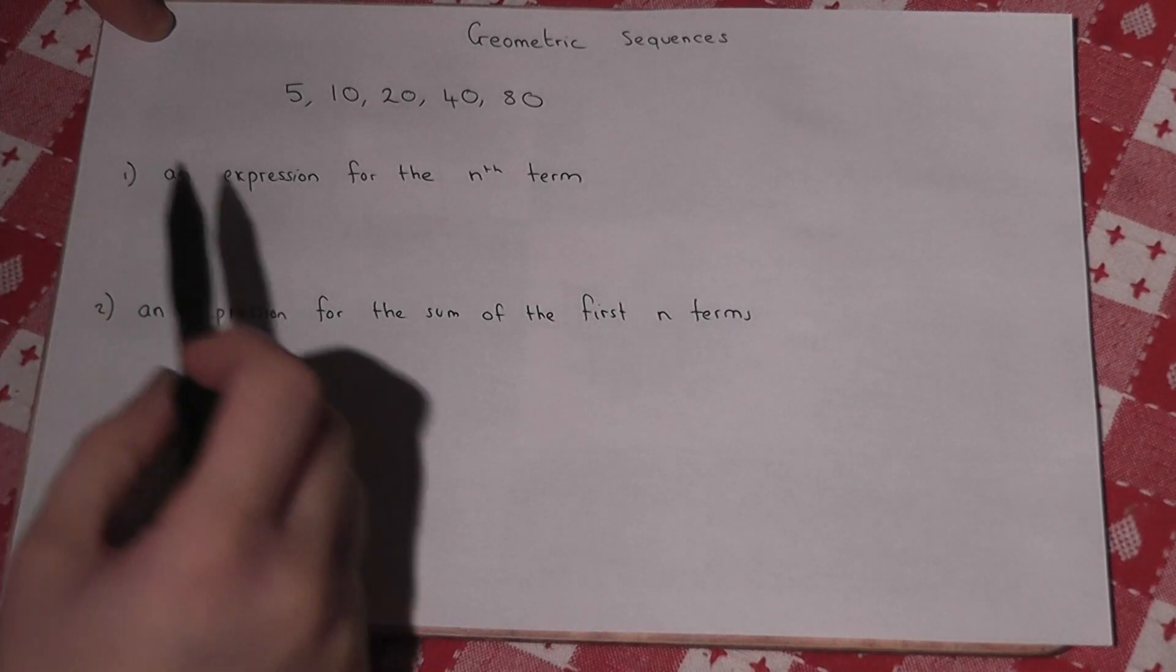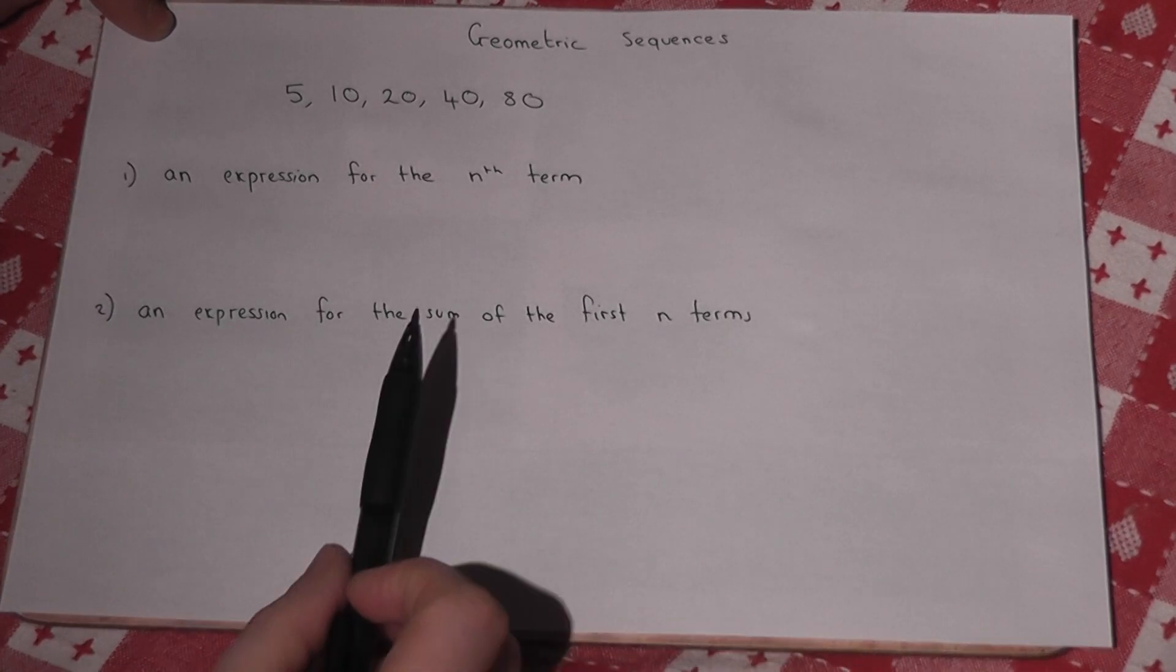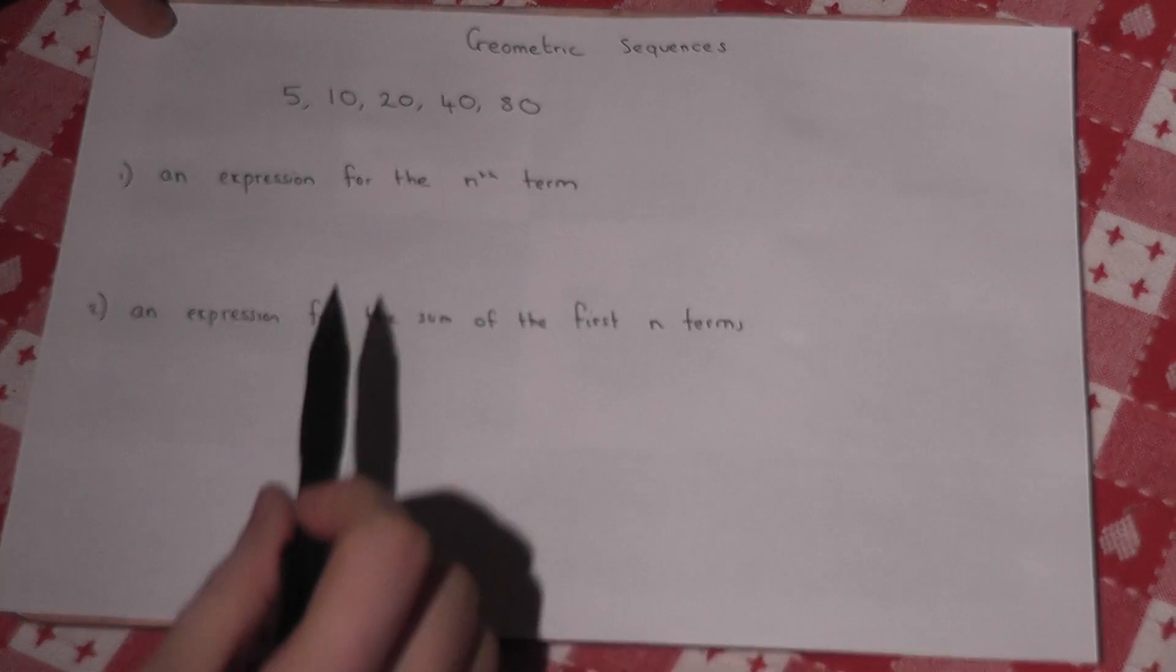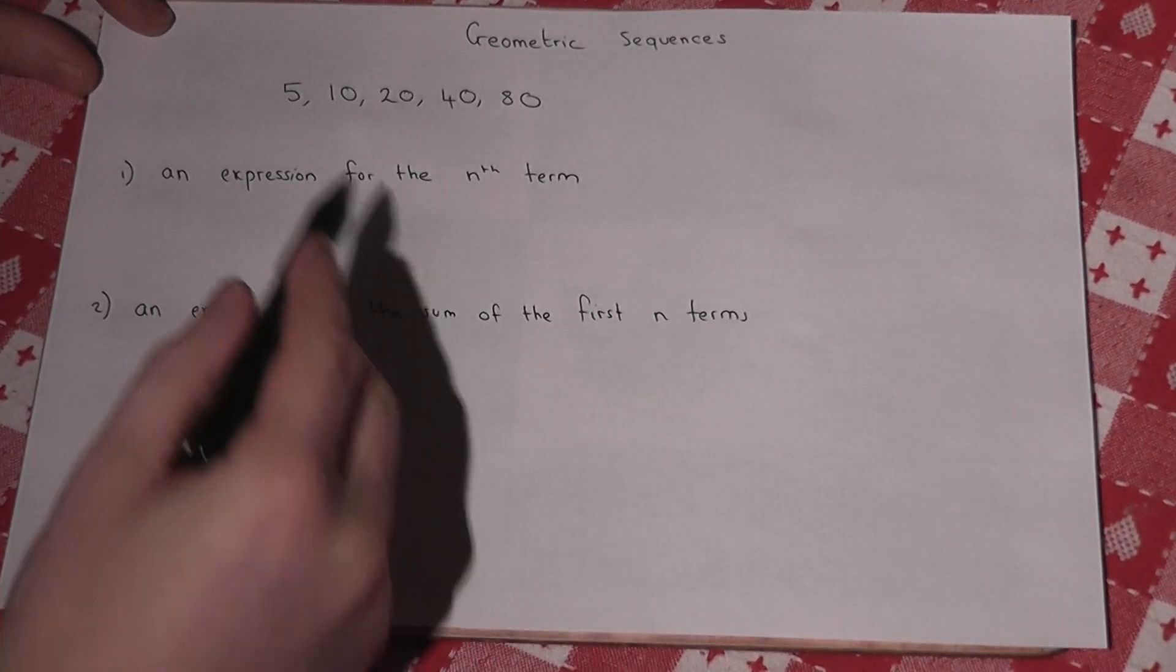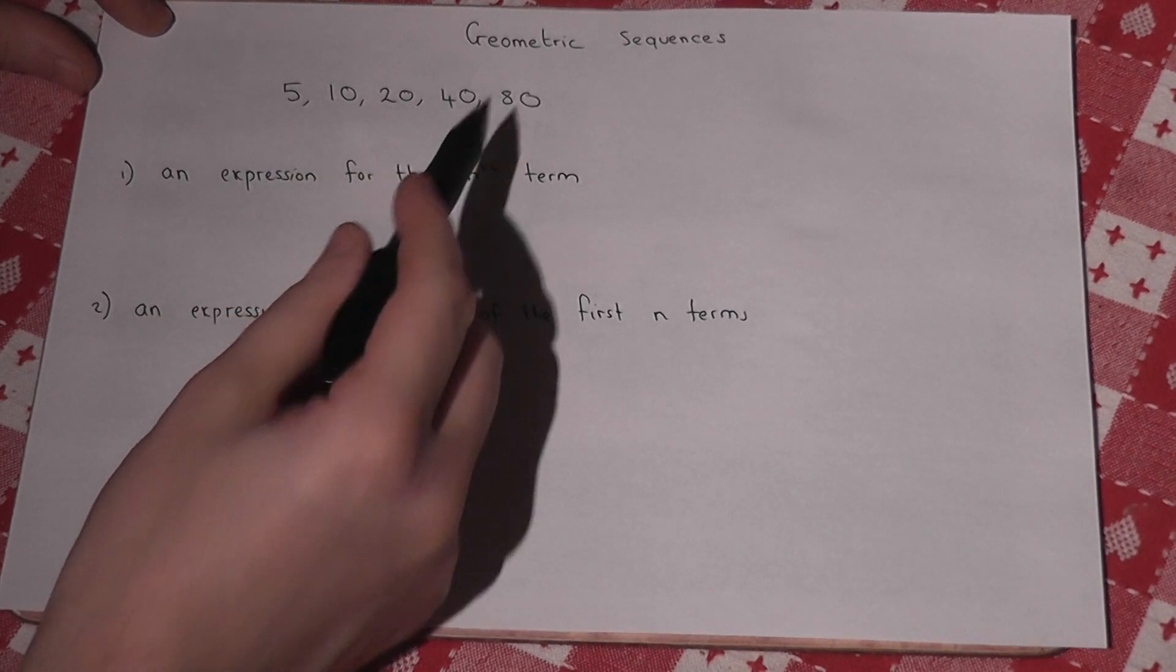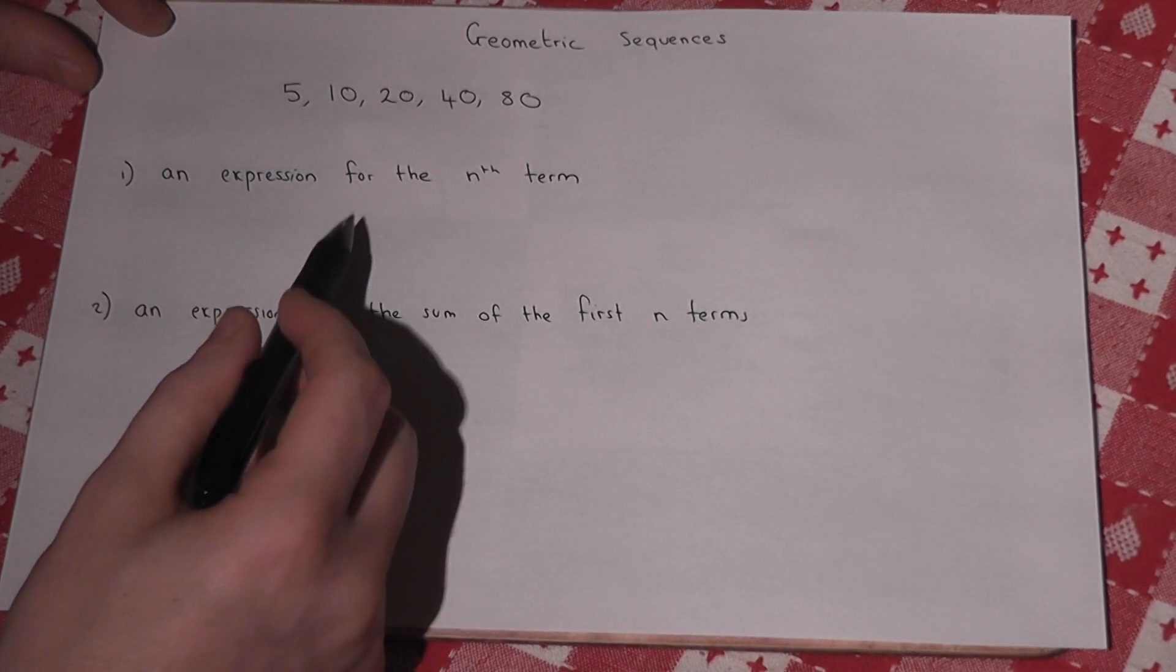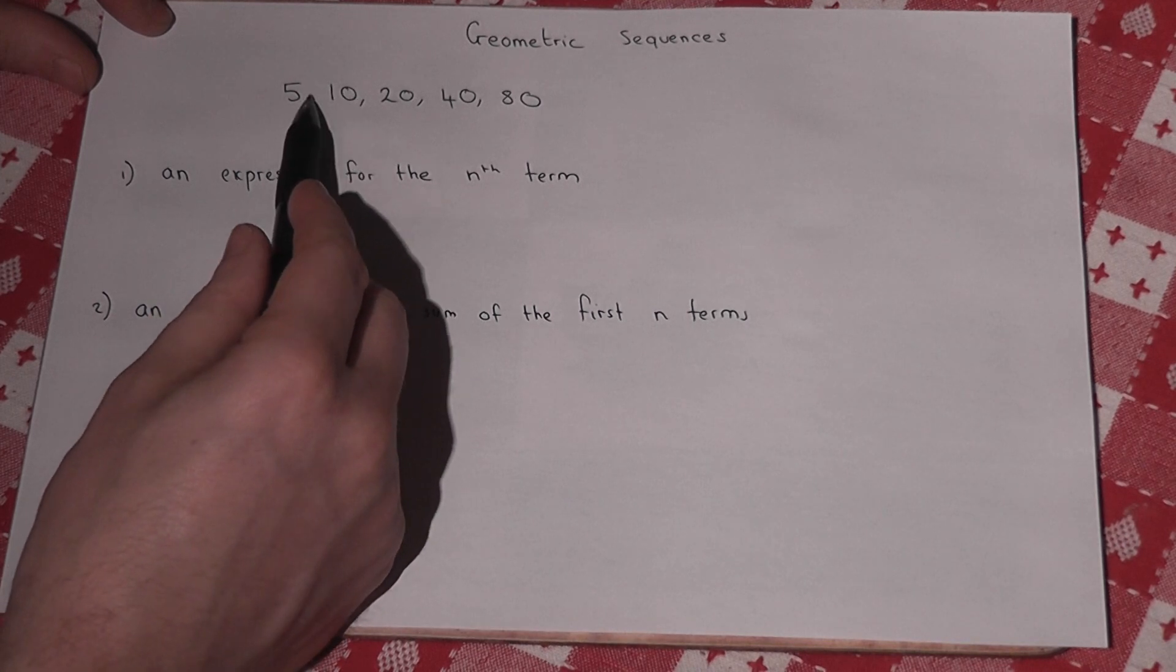This video looks at the two key formulae for geometric sequences. Now this sequence is geometric because to get from term to term we times by a constant ratio, which if I do 10 divided by 5 is 2.